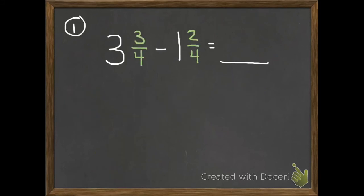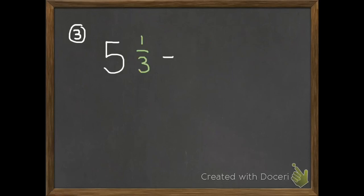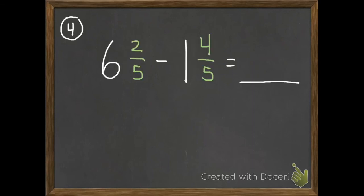Okay, here's your first problem to do on your own. 3 and 3 fourths subtract 1 and 2 fourths. Remember, we always want to check at the end if we can put our fraction part in simplest form. Number 2: 4 and 5 sixths subtract 3 and 2 sixths. Number 3: 5 and 1 third subtract 2 and 2 thirds. And last of all, 6 and 2 fifths subtract 1 and 4 fifths.